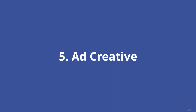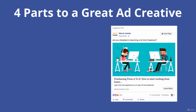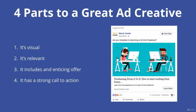The fifth key to success with Facebook ads is the ad creative — what people actually see in their Facebook newsfeed. There are four parts to a great ad creative. First, it needs to be visual: there's a lot of competition for eyeballs in the newsfeed, so it needs to catch attention — bright colors and faces really stand out. Second, it needs to be relevant, with the image related to what the ad is about. In this example about freelancing, there are two people working at home looking like they're having fun. Third, include an enticing offer — 'Freelancing A to Z, how to start working from home, learn from five-year full-time experience.' And fourth, strong copy with a clear call to action encouraging people to learn more.